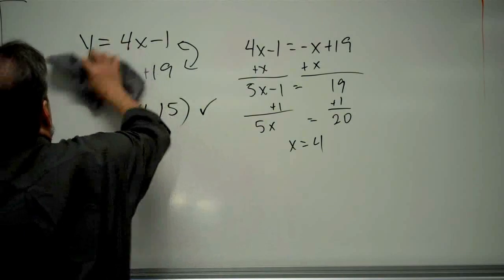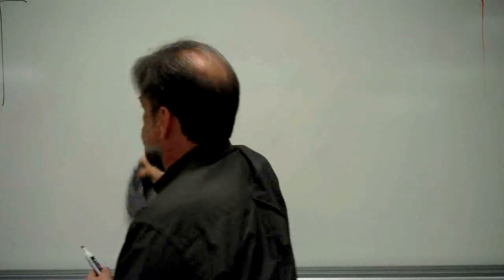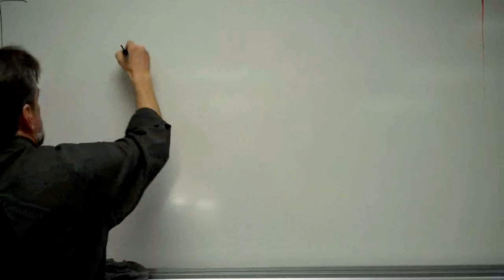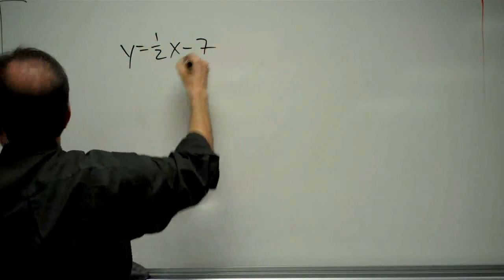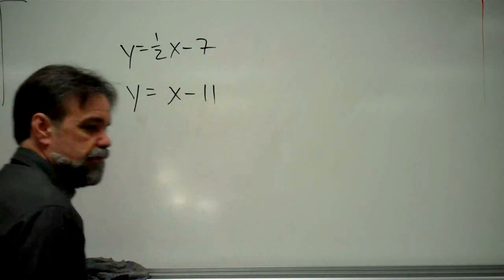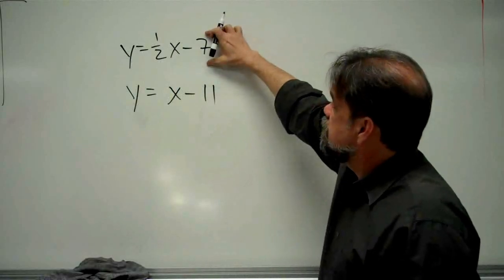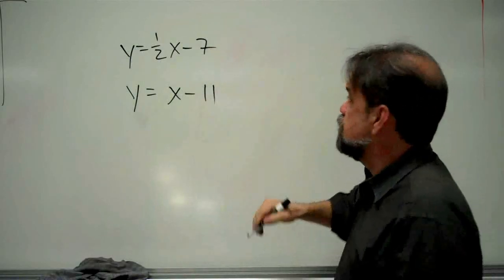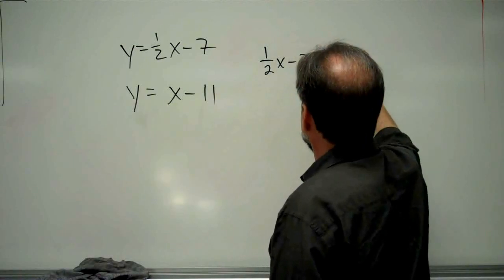Let's try another problem. Let's do y equals 1 half x minus 7 and y equals x minus 11. We're going to do the exact same thing. We're going to say this equation is going to equal this equation. So I get 1 half x minus 7 equals x minus 11.